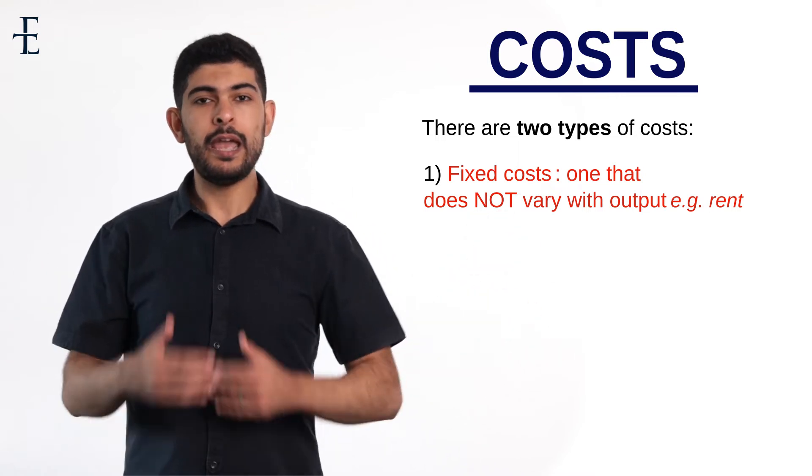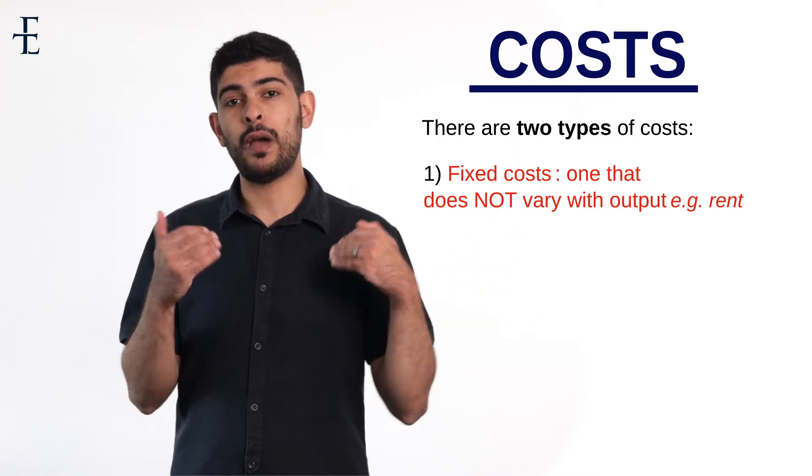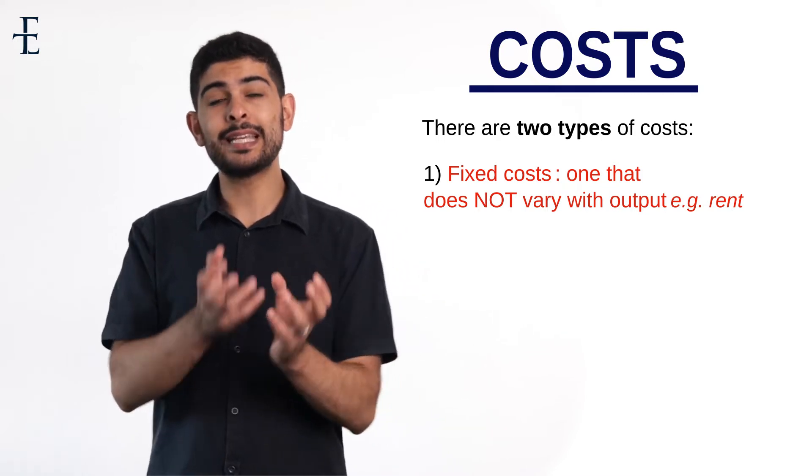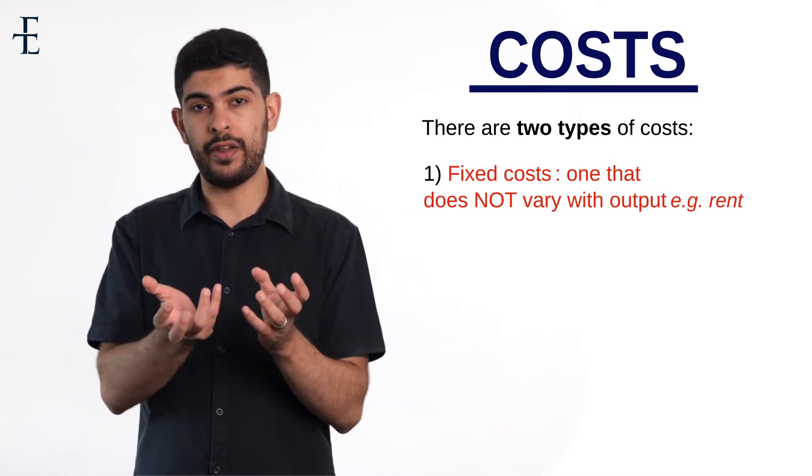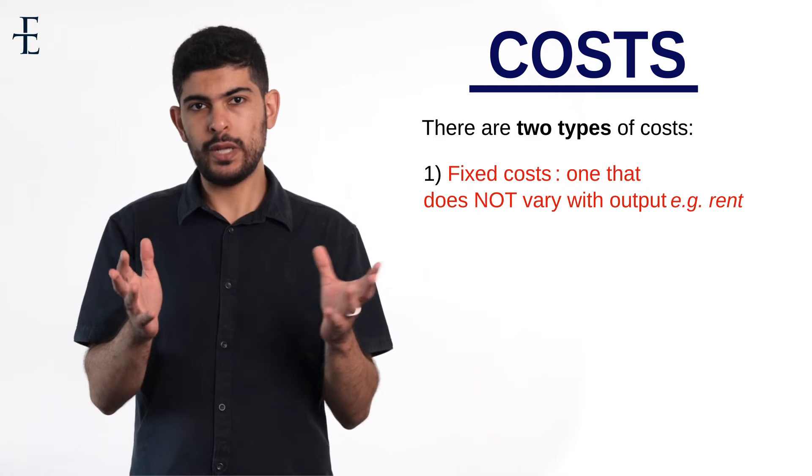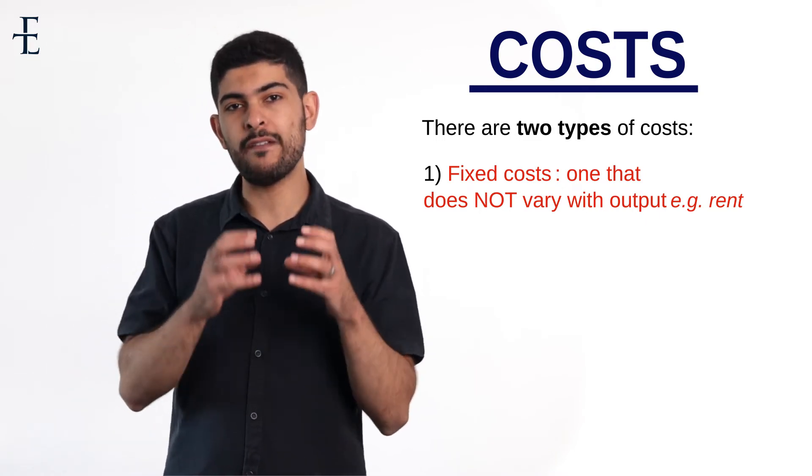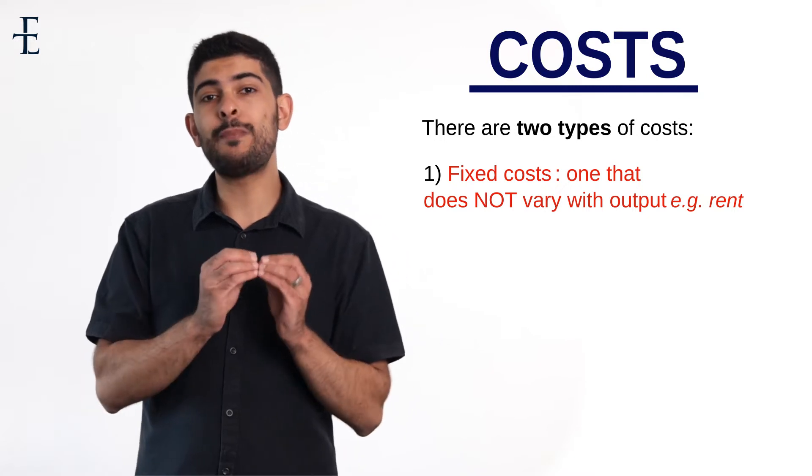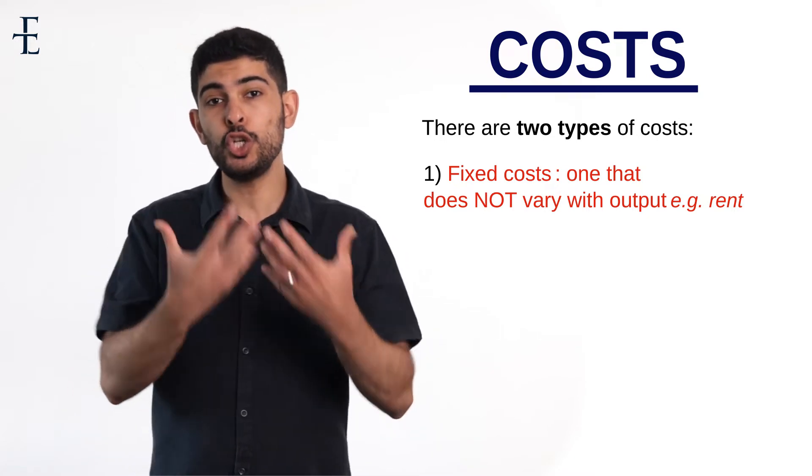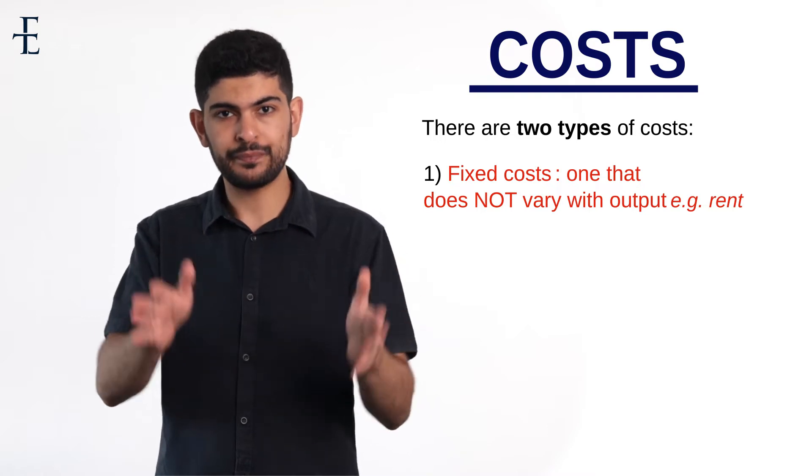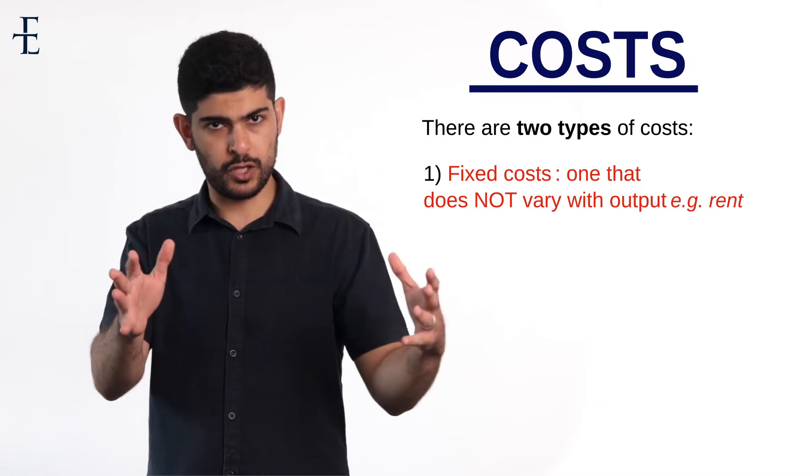If that chocolate factory now produces the maximum number of chocolates that it can produce, does the amount of rent that we pay vary? Does it change? No, it stays exactly as it is. That is therefore an example of a fixed cost, because irrespective of the amount of output I produced, I pay the same cost each time. That's your first cost, fixed cost.